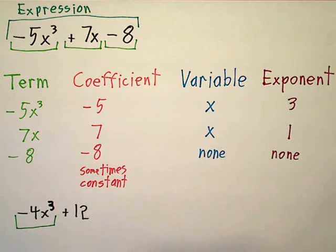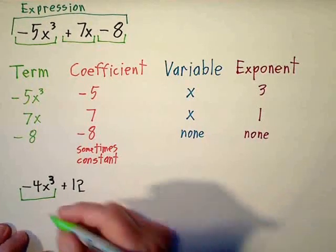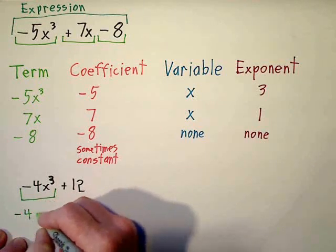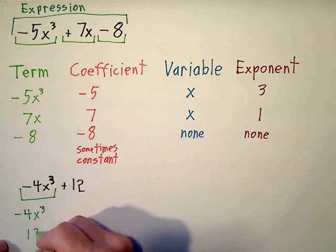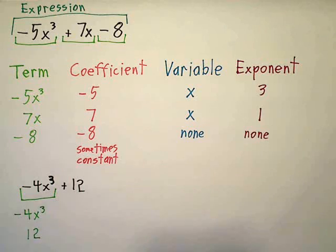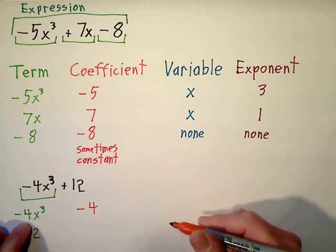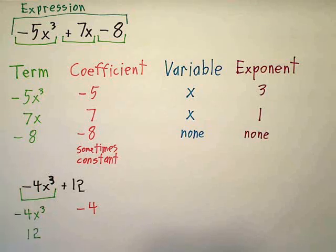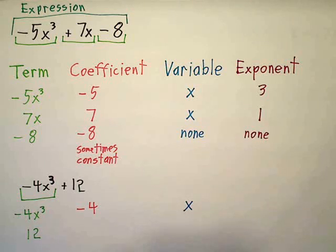So negative 4x to the third, that's a term. And also the 12 is a term. And the coefficient for the first term here is negative 4. The variable is x. And the exponent is a 3.